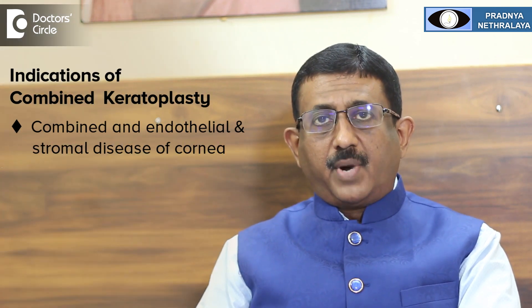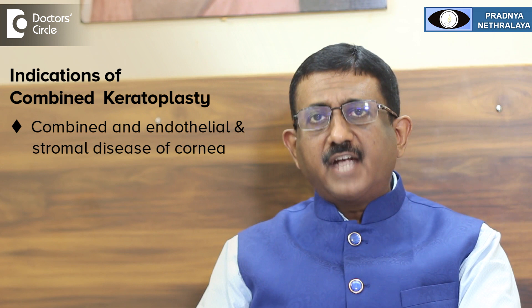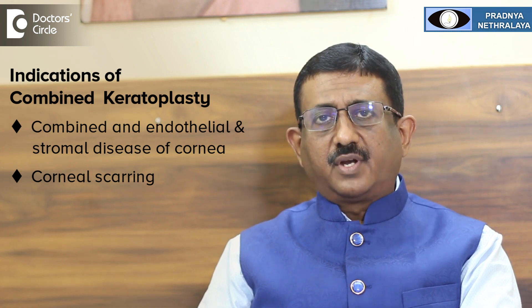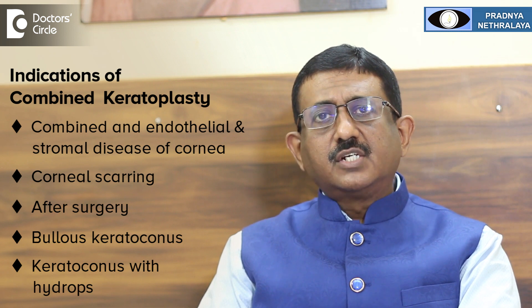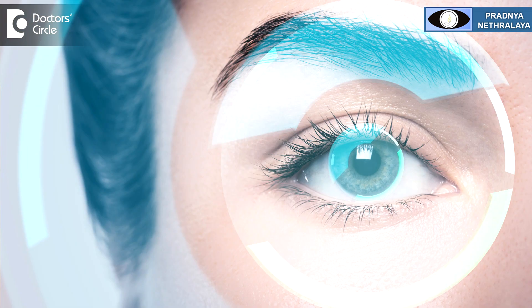The indications are combined endothelial and stromal diseases of the cornea, severe corneal scarring because of various reasons — may be in the form of trauma, some infections, or following surgery — or a condition called bullous keratopathy where the cornea gets damaged, or a condition called keratoconus with hydrops. These are the indications where a full-thickness cornea is transplanted from a dead person to the patient.